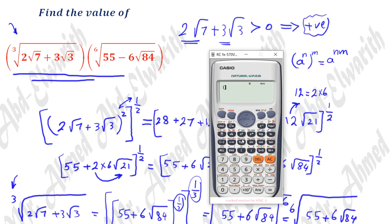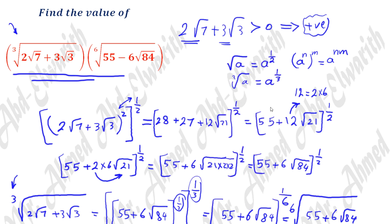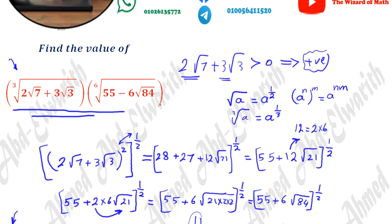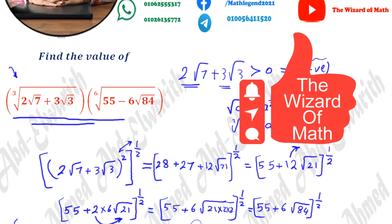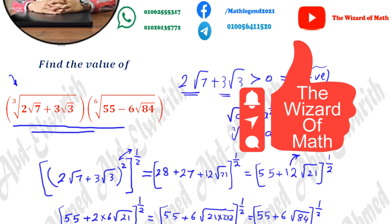To confirm our result, we can use a calculator: cube root of (2√7 + 3√3) multiplied by the sixth root of (55 − 6√84) equals 1. We have found the result of this expression without using a calculator. Please don't forget to like the video, subscribe to our channel, comment and share. Thank you for watching, goodbye.